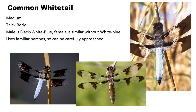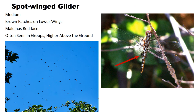Now this is the first one in the medium size category — more like two and a half inches by two and a half inches. This is the common whitetail. The male has that white or bluish tail; the female doesn't. What really identifies this one is that short, thick body — after looking at the other dragonflies, the body looks a little too short for the size of the wings. It's actually pretty easy to identify just by that short thick body.